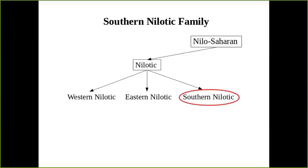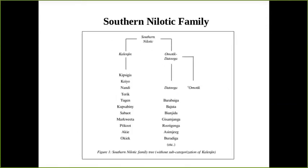Just some brief background: the Southern Nilotic family is a subfamily of the larger Nilotic family, together with the Eastern Nilotic and Western Nilotic subfamilies. The Nilotic family itself is oftentimes associated with the Nilo-Saharan phylum. The internal structure of the Southern Nilotic family is proposed by Rotland 1982, commonly adopted even today. There are two primary branches: the Kalangian branch, consisting of languages spoken mostly in Kenya and Uganda, and then a second branch, Amotik-Datoga, which has two subbranches — the Datoga varieties and the moribund language Amotik.